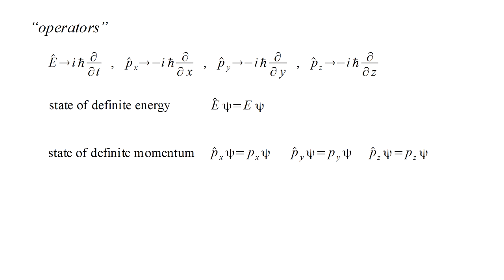Likewise, if the system is in a state of definite X momentum, then the X momentum operator, P hat sub X, applied to the wave function gives the X momentum value, P sub X, times the wave function. And in general, if the system is in a state of definite O, where O is any physically observable property, then the operator O hat applied to the wave function gives the value of O times the wave function.